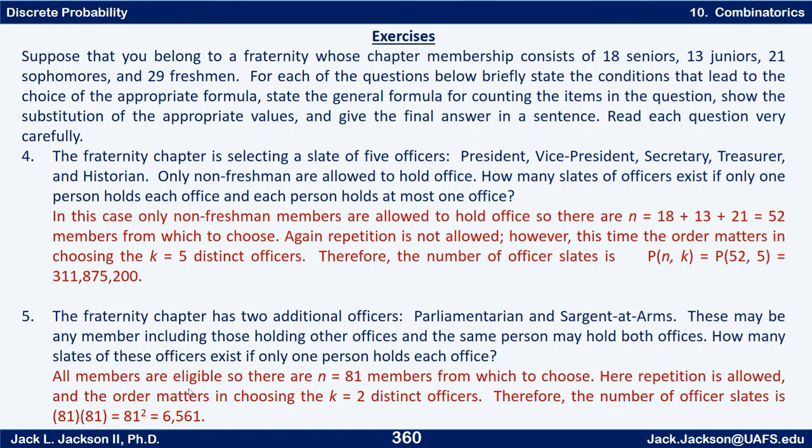Okay, I think we have this fixed now. So in this case, all the members are eligible, so there are n equals 81 members from which to choose. Here repetition is allowed and the order matters choosing the k equals two distinct officers. So the number of officer slates is 81 to the second power, 81 choices for the parliamentarian and for each one of those 81 choices for the sergeant at arms. Notice that has nothing to do with any of the other officers. So that's just 81 to the second power, 6,561.